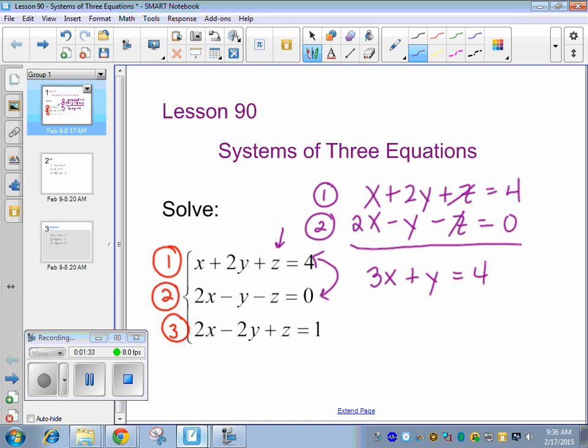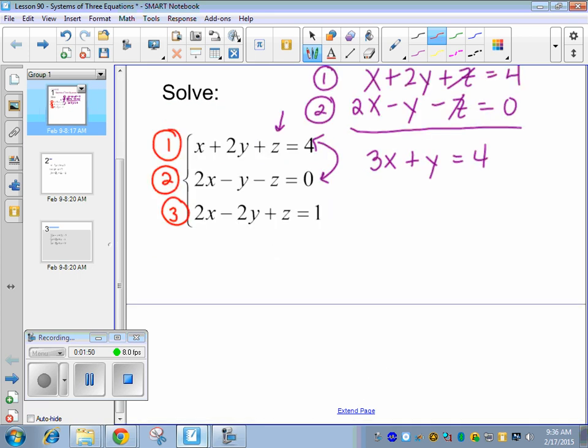Now, you have to cancel the same variable for the next step. And you can use any combination you want to, besides the ones we just used. So we used one and two, so now your choices are one and three, or two and three. Which one is easiest? One and three, or two and three? Probably two and three. It doesn't matter. If you use one and three, it works. You just have to multiply by a negative. So I'm going to use two and three, so I don't have to do that step.